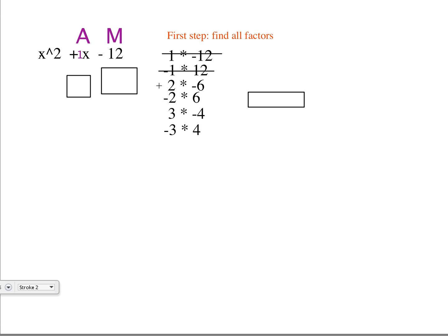2 plus negative 6 is the same as 2 minus 6 which is negative 4. And then negative 2 plus 6 is a positive 4, so those two don't work.